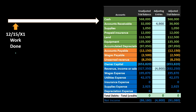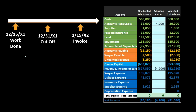We have an example where work was done on 12/15 of year X1, but we didn't invoice the work until 1/15 of year X2, in the next year. Note that we have crossed over the cutoff date — the date of the financial statements — between the time the work was done and the invoice was generated. This may happen as a normal part of the accounting process. Under the revenue recognition principle, this work needs to be recorded prior to the date of the financial statements, as of the date the work was done, 12/15.